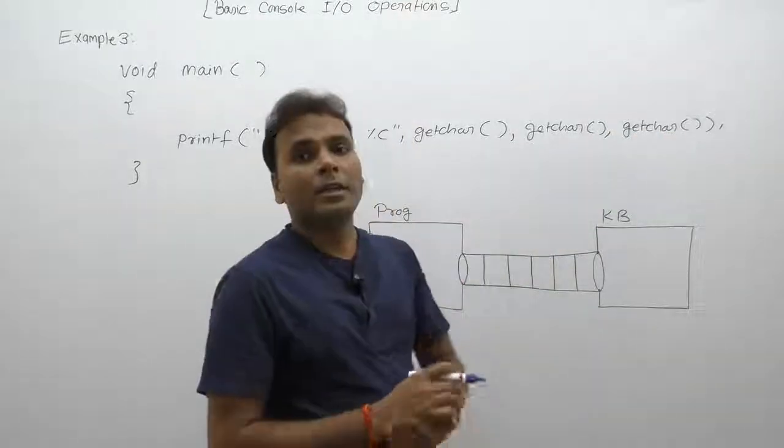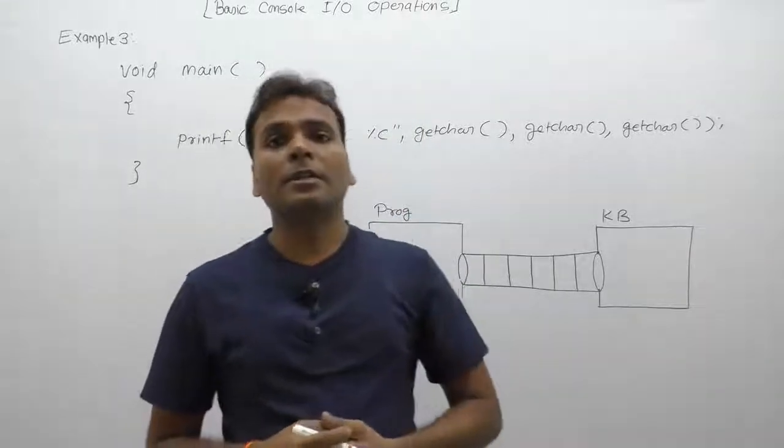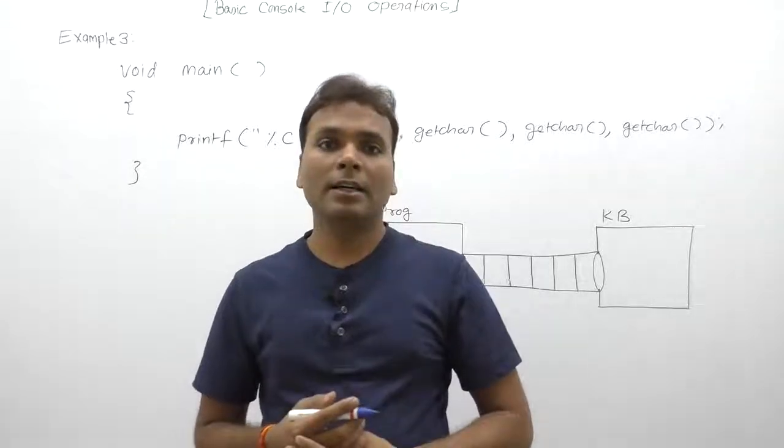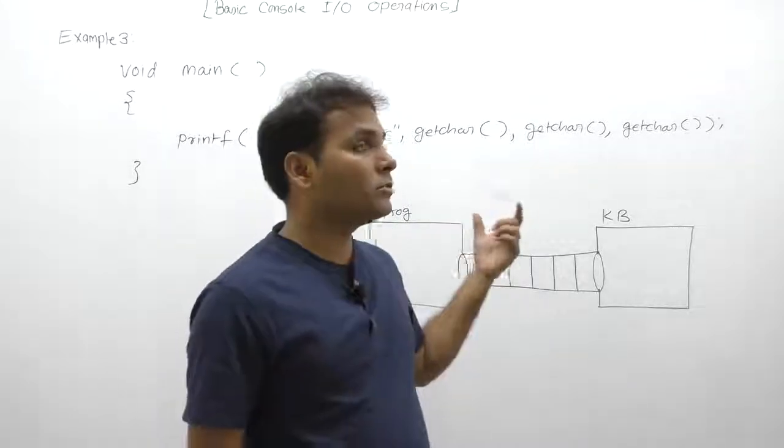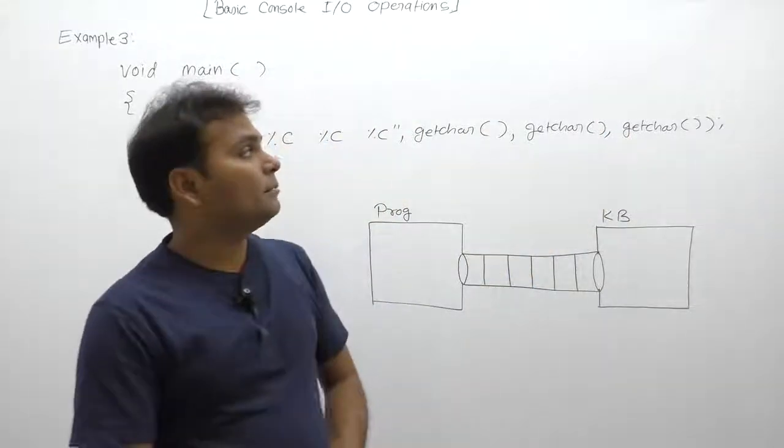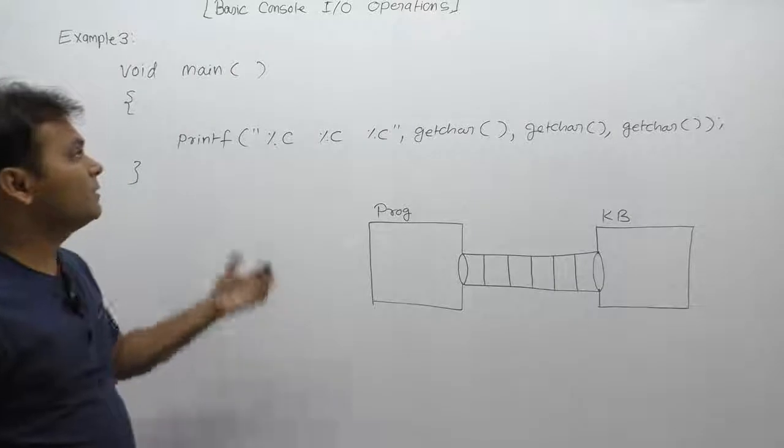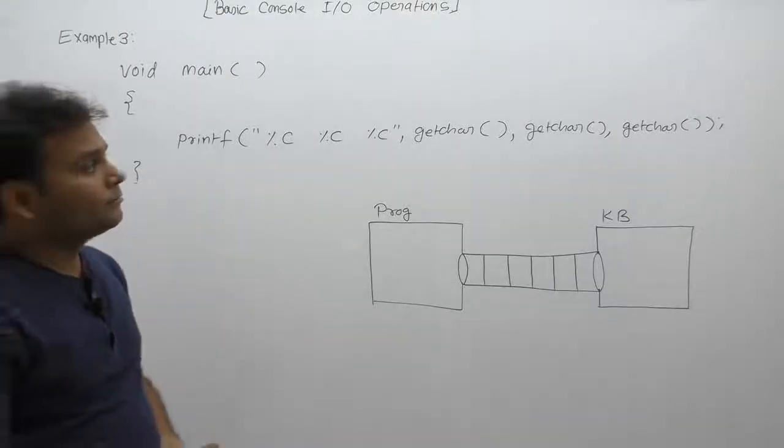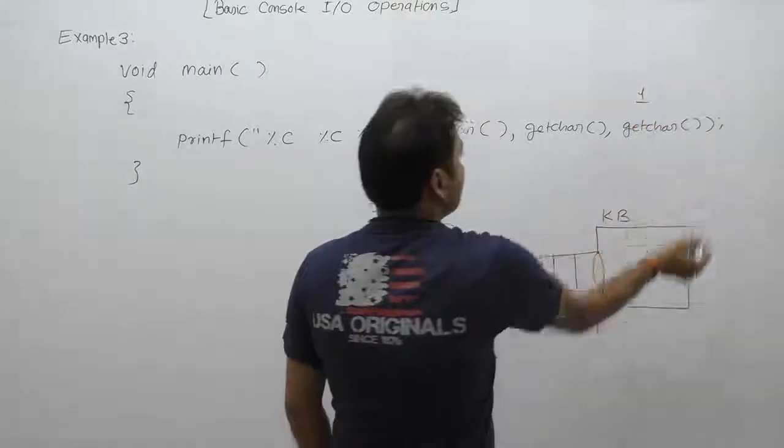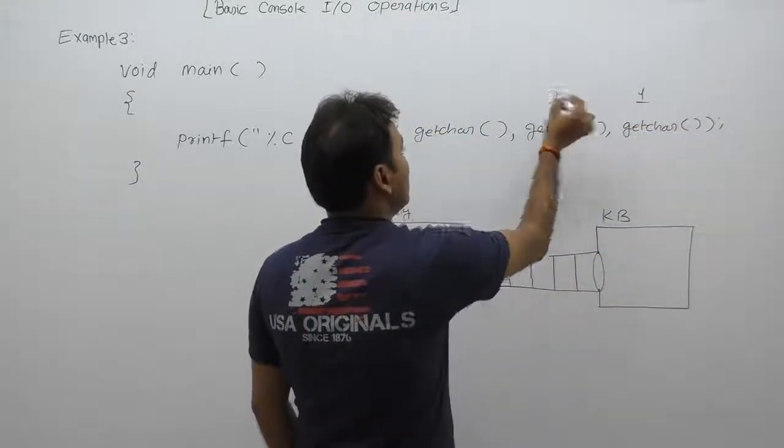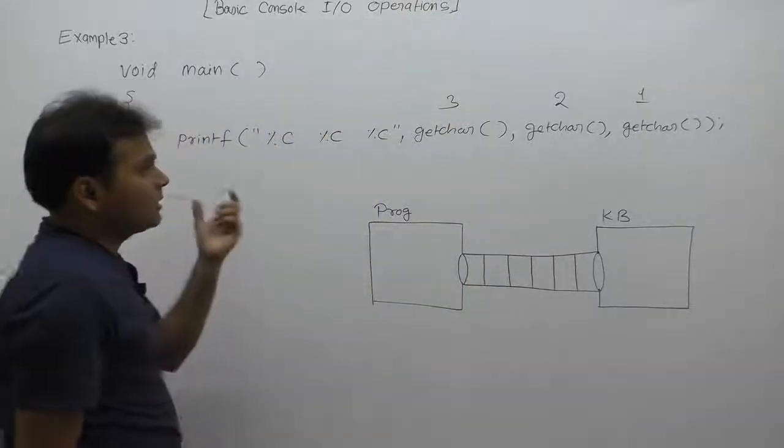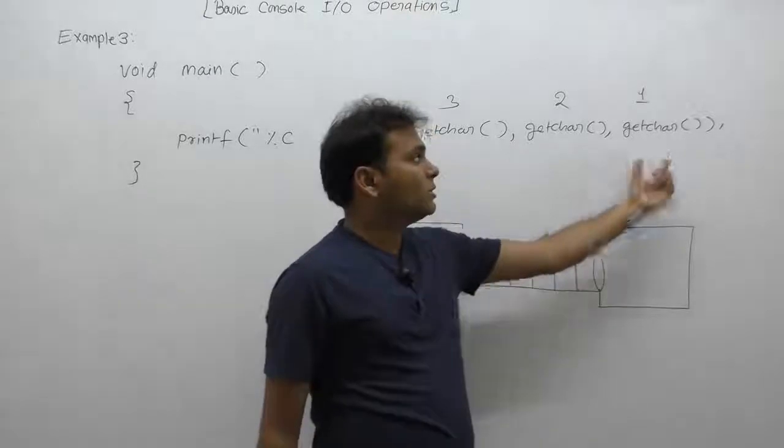As we are discussing in operators, if you supply multiple expressions or arguments, which one is solved first? Last expression, then second last, like that. Similarly, same property we are following regarding printf function. In this example, which execution happens first? Last getchar(), then second last, then that one, like that. So we will give chance first to the last getchar() function.